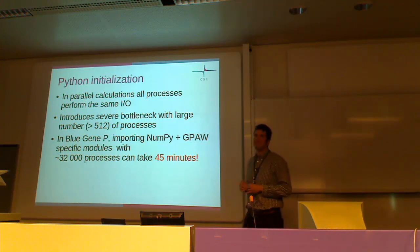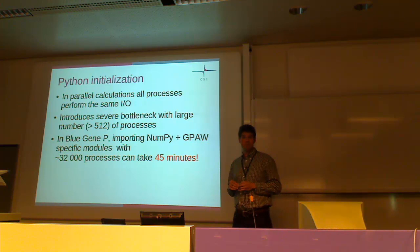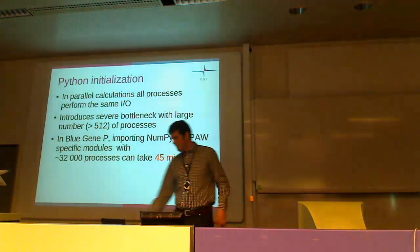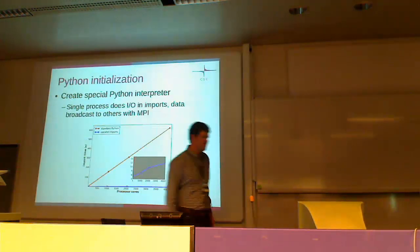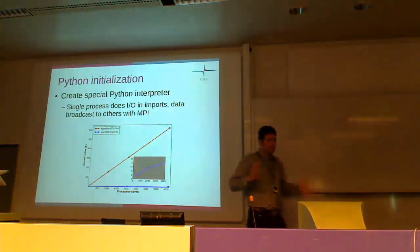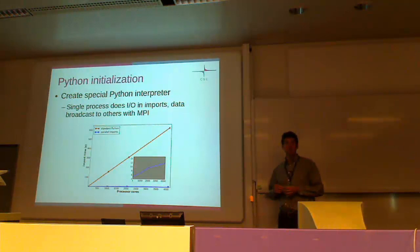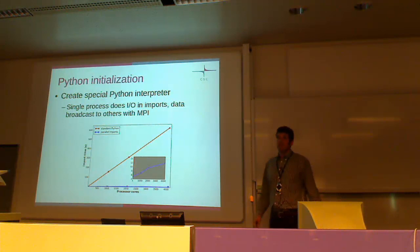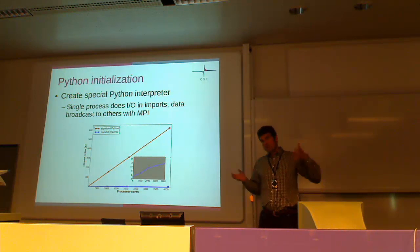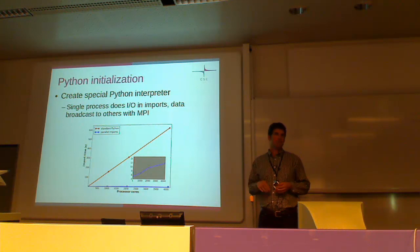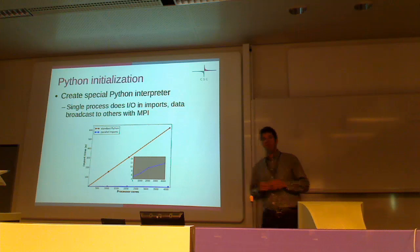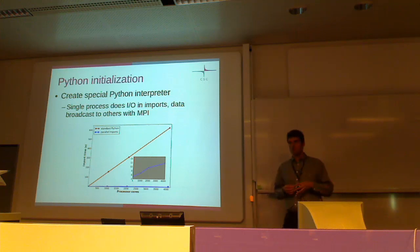We actually found a paper from 1992-1993 that already introduced this idea of making specific wrappers for C standard IO functions. The approach is that every time you call fopen within Python's import mechanism, you call your own wrapper, and in that wrapper, only one process opens the file and sends the information to the other processes. When you want to read something from the file, once again only one process does the reading and then uses MPI to transfer the data to other processes.